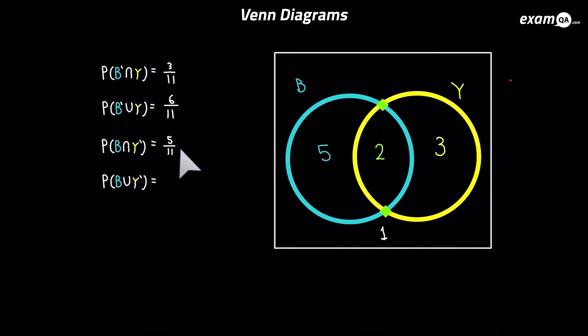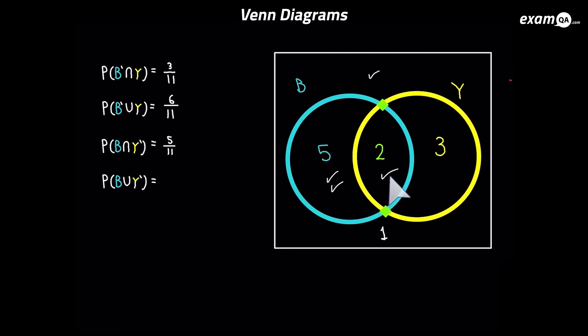The last one is P(B ∪ not Y). Tick every place with B, and tick every place with not Y — the outside and here. It's OR, so it could be any position with one or two ticks. So it's going to be the 5, the 2 and the outside. Five plus two is 7, and the outside is 1, which gives us 8 — so 8 over the total being 11.